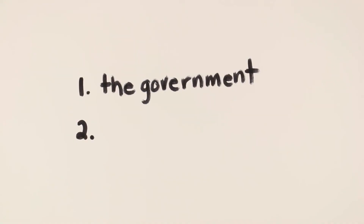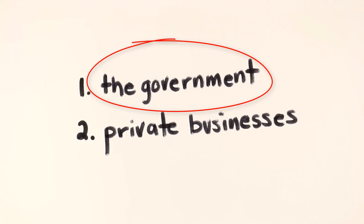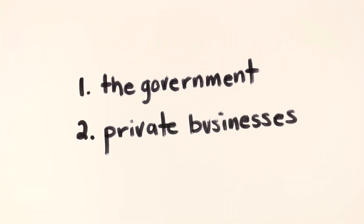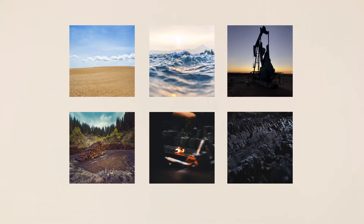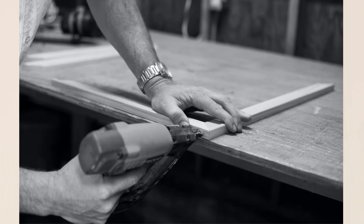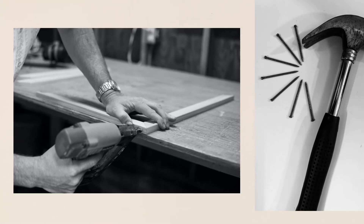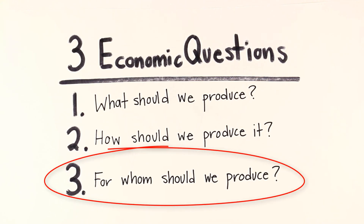Now let's look at the question: how should we produce? In each country there are two kinds of producers — the government and private business. In a few countries the government produces most goods and services; however, in the United States most goods and services are produced by private businesses. One way businesses determine the best way to produce is through the allocation of scarce resources — for example, should human labor be replaced with machines, or should a carpenter spend his resources on a nail gun or continue to use his hammer?